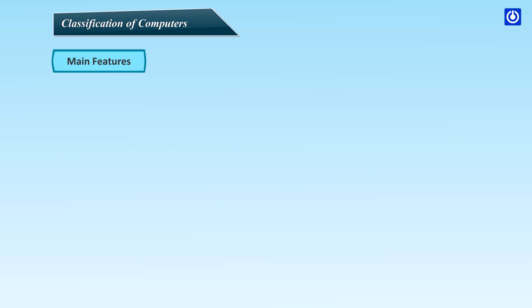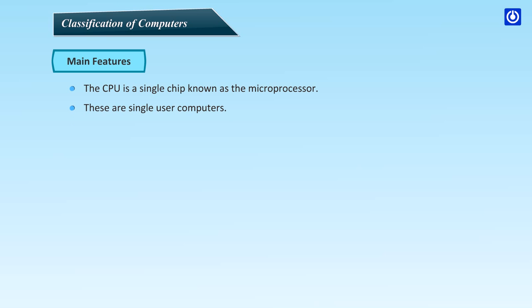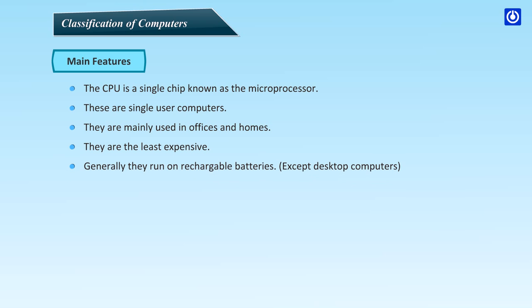Main Features: The CPU is a single chip known as the microprocessor. These are single-user computers. They are mainly used in offices and homes. They are the least expensive. Generally, they run on rechargeable batteries, except desktop computers.